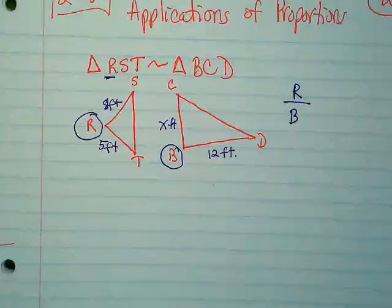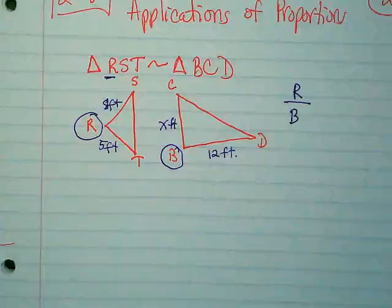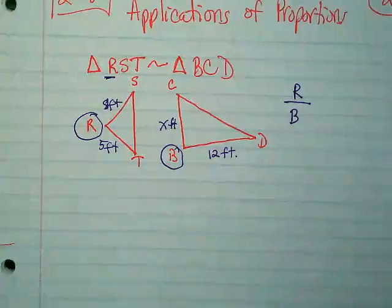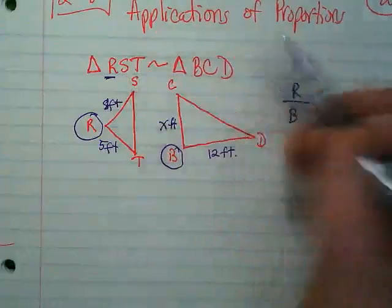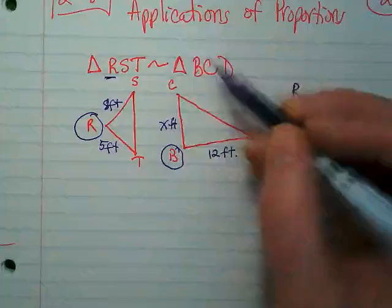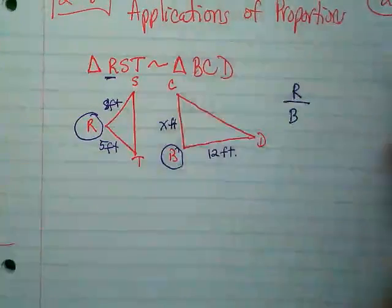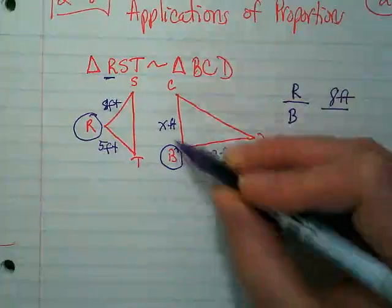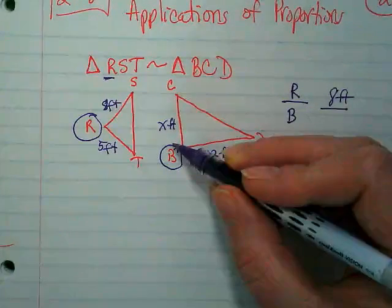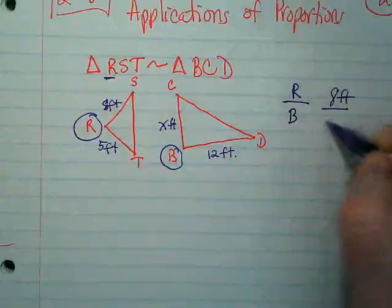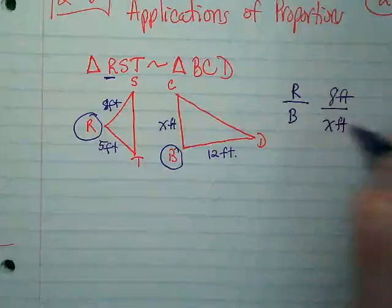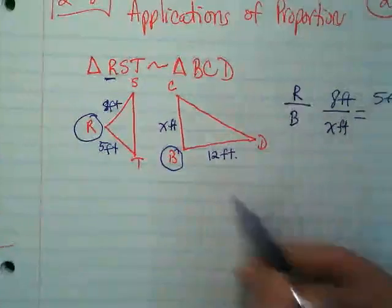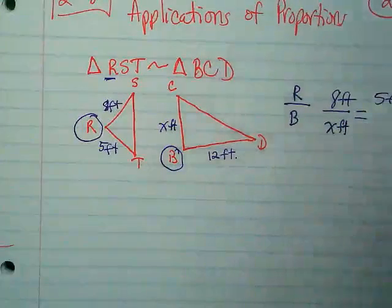That's now telling us what these measurements correspond with. So I've got S corresponds to C. That means that this measurement, 8 feet, corresponds to the X. And that means the 5 feet corresponds to the 12 feet.